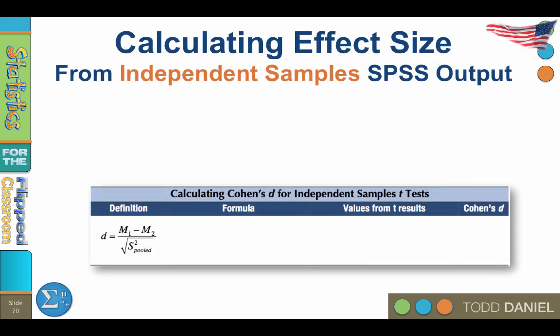Calculating effect size from independent samples SPSS output requires pooling the variance of the two samples. When the variance, or standard deviation, of your groups is different and one sample group is larger than the other, the variance of the larger sample will contribute more influence over the total variance. To fix this, we weight the variance of each group by the sample size of each group, and that is called pooled variance.